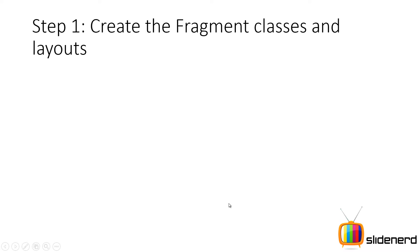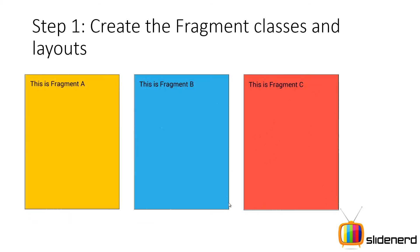What are the different steps involved in creating a scroll tab? Step 1: define the number of pages that you want to have. In my case, I have three pages: Fragment A, Fragment B, and Fragment C. In other words, I'll have to create three classes that represent the three pages and I'll have to create three separate layouts for each of these pages.